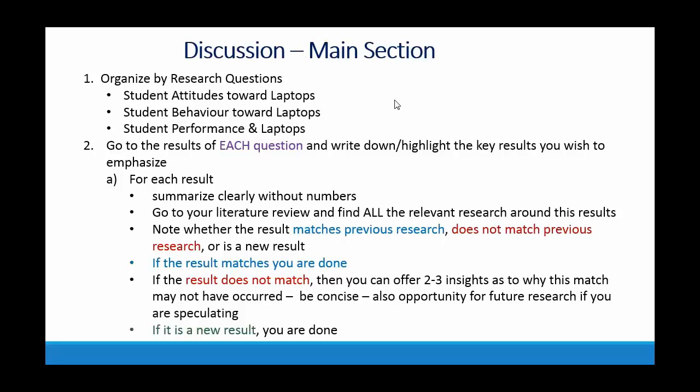For each specific section — like student attitudes towards laptops — you have a list of, say, five results that you want to discuss. For each result, let's take one: secondary students are positive towards laptops, they get excited about them. The first thing you do is summarize the result. You don't restate everything in the results section because that's already been done. You clearly summarize — generally without numbers, though you might say half the students were positive — because the results section covers the numbers. So you clearly summarize the result. That's step one.